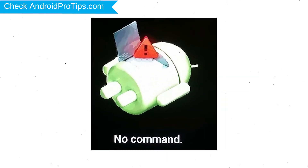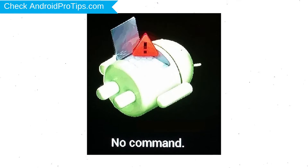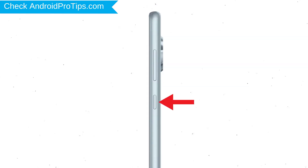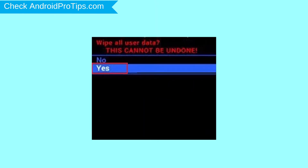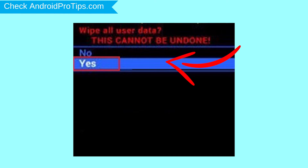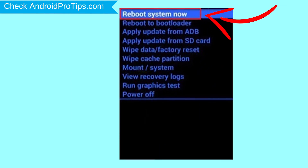Afterward, you will see the Android screen. Then, while holding down the power button, press and release the volume up button. Choose the option to wipe data and factory reset — use volume buttons to select and the power button to accept. Next, select the yes option. Finally, select reboot system now option.